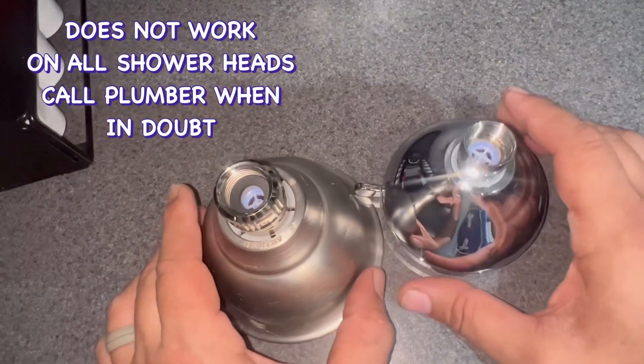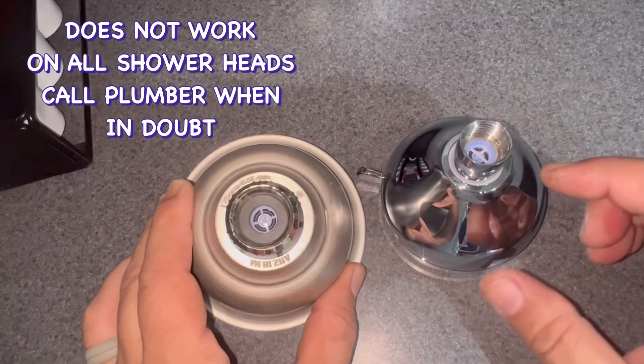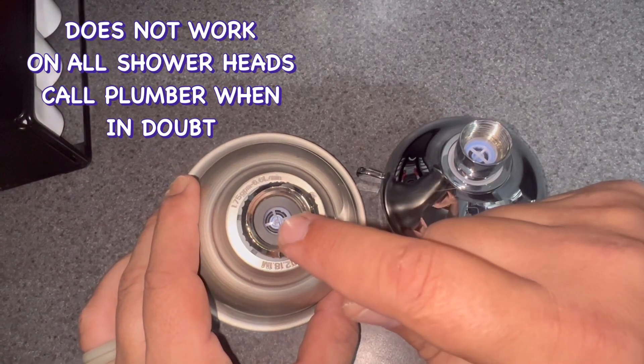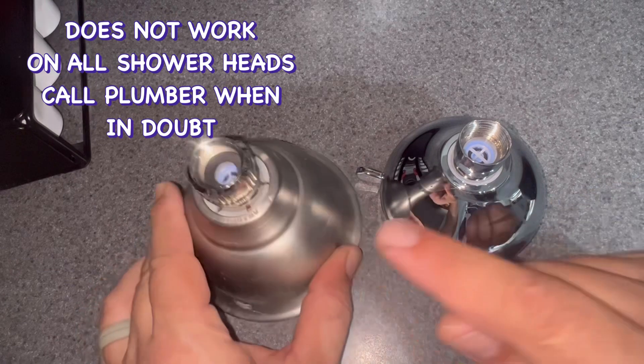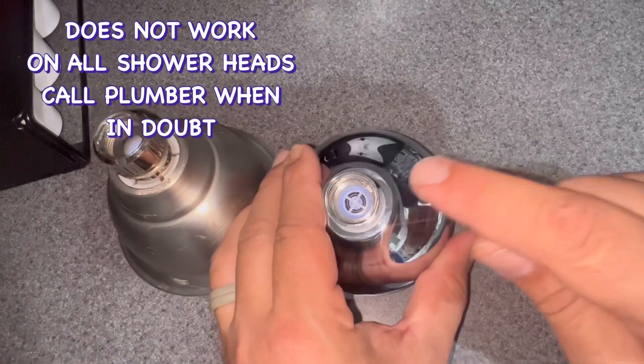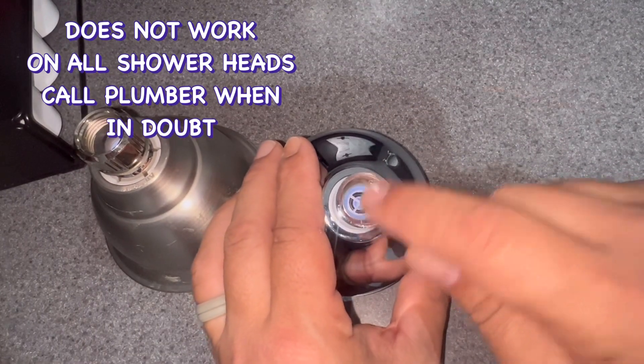Here I have two basic shower heads and as you can see they both have this blue cross thing down in the center of them. That's actually a restrictor that restricts the flow of the water.